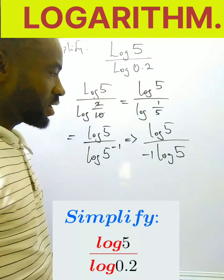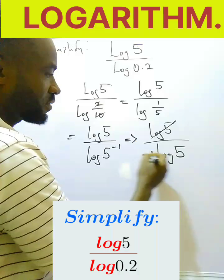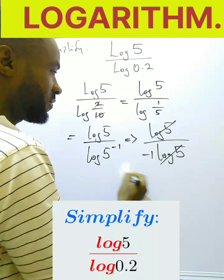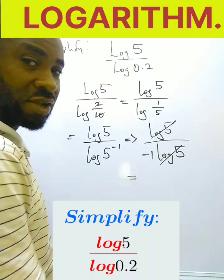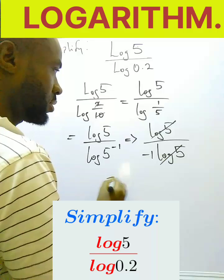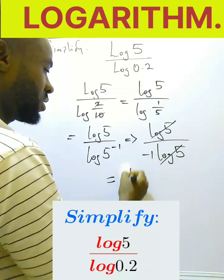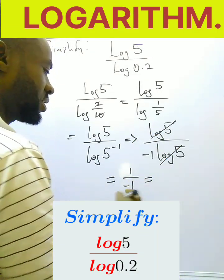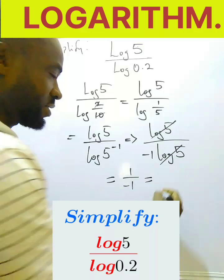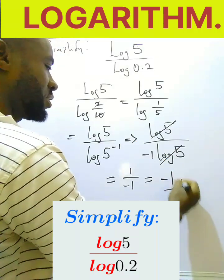And so now this log 5 can cancel out this log 5, so that I'm left with 1 over minus 1. And 1 over minus 1 is the same thing as minus 1.